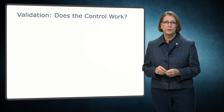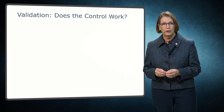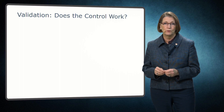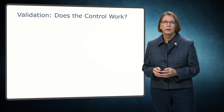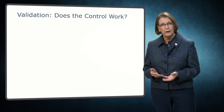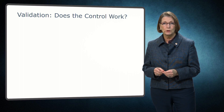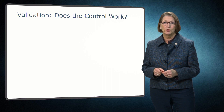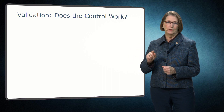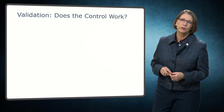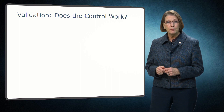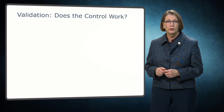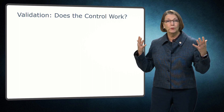For effective food safety management, it is important to consider both validation and verification. Let's start with validation first. According to the Codex Alimentarius Commission, the term validation means obtaining evidence that a control measure or combination of control measures, if properly implemented, is capable of controlling the hazard to a specified outcome. In other words, proper validation answers the question: does the control actually work?